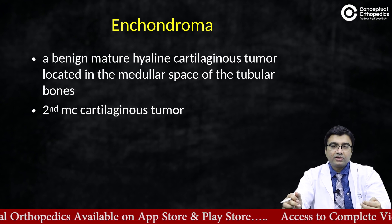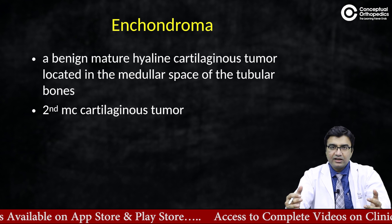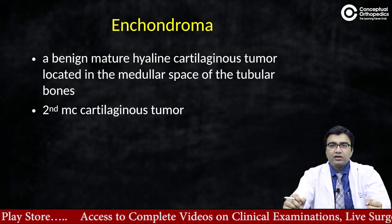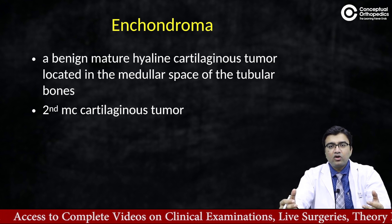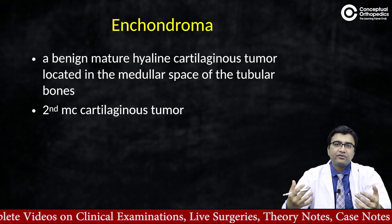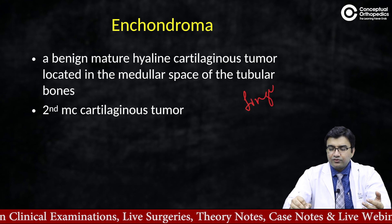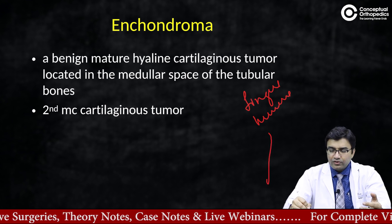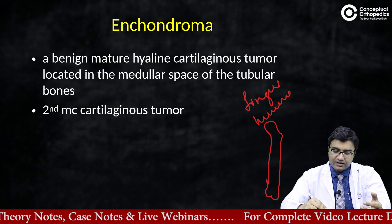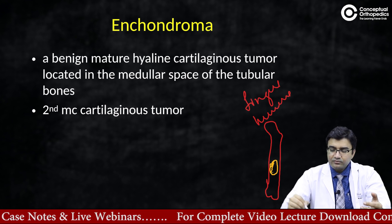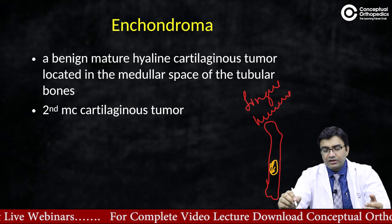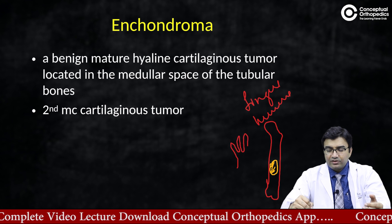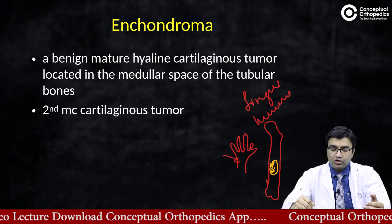Talking about enchondroma — basically it is a benign cartilaginous tumor formed from hyaline cartilage. By definition, it is located in the medullary canal of the tubular bone, such as the fingers, humerus, thigh bone, and leg bone. If we look at the location, it typically presents as a central lesion, and the most common presentation is in the hand — it is the most common tumor of the hand.